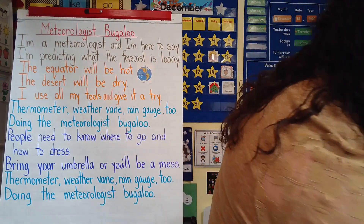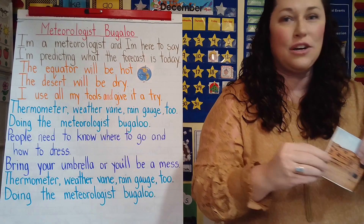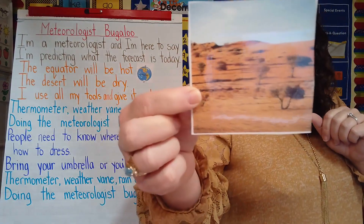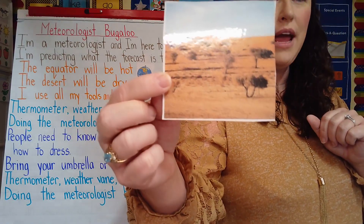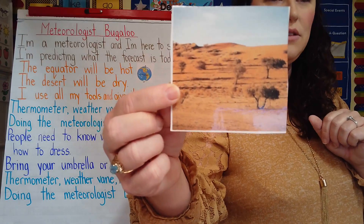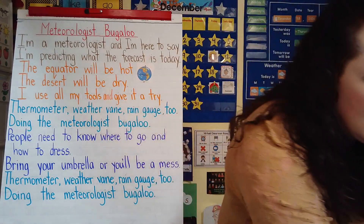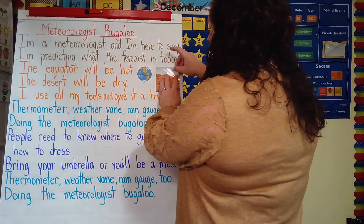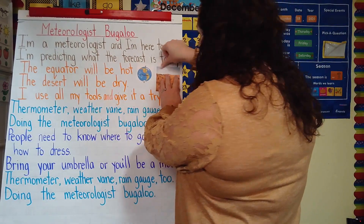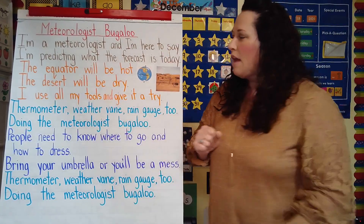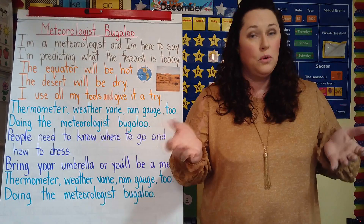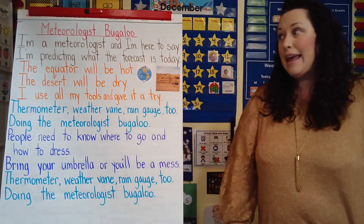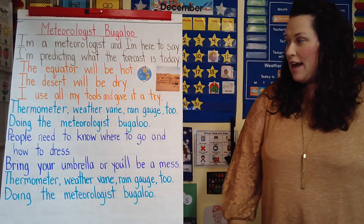And then I say the desert will be dry. Take a look, this is a desert. Do you see anything green there? Do you see any rain, any clouds? Nope. It's super hot and dry. No rain, no clouds. I use all my tools, so I pretend like I'm carrying a toolbox and give it a try.